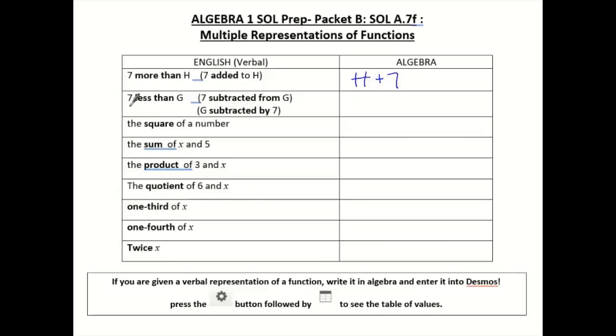The next one says 7 less than G. So I'm going to start with G, just like here I started with H. It says 7 less than that, so I'm going to do G minus 7. These can get a little bit confusing because we have the 7 first. Sometimes we're tempted to do 7 minus G. But if you see less than or subtracted from, those two mean the same thing. So with subtraction, you do have to be careful. Look at what it says.